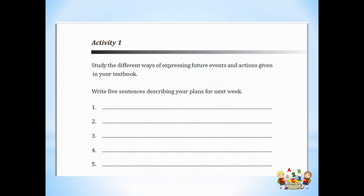Take your workbook and turn to Unit 5, Activity 1. Study the different ways of expressing future events and actions given in your textbook. Write 5 sentences describing your plans for next week. Earlier in the pupil's book Activity 3, you had to write about the things you would do tomorrow. In the workbook, this activity asks you to write about your plans for next week. So do this activity in your workbook.